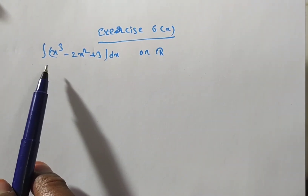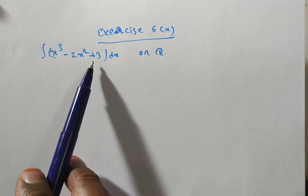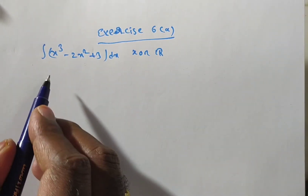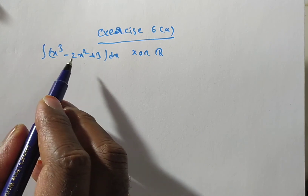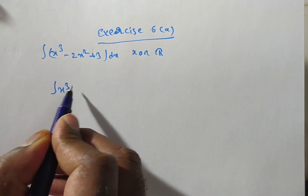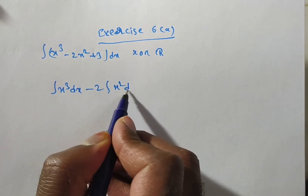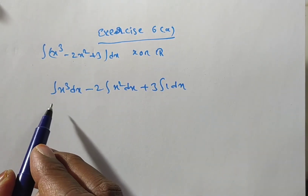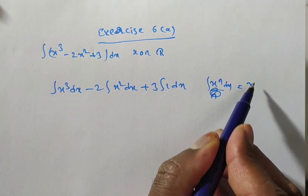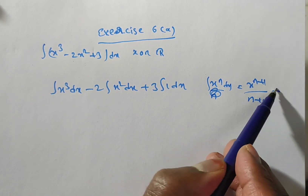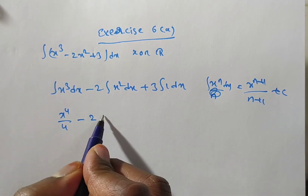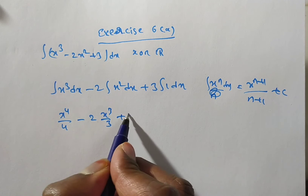Next problem — exercise 6a: integral of (x cubed minus 2x squared plus 3) dx where x is a real number. This is in the form f(x) plus g(x) plus h(x), so by the linearity property we write: integral x cubed dx minus 2 times integral x squared dx plus 3 times integral 1 dx. Applying standard form 1: x to the power of 4 divided by 4 minus 2 times x cubed divided by 3 plus 3x plus c.